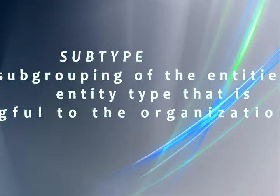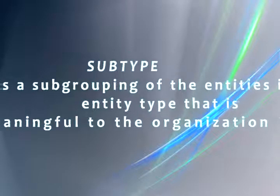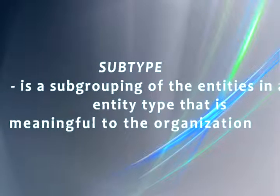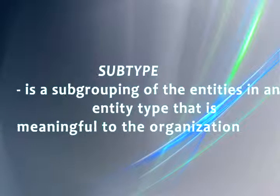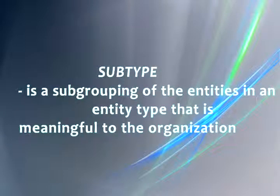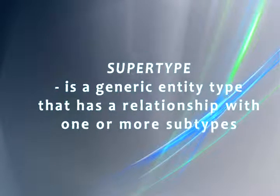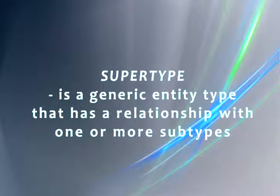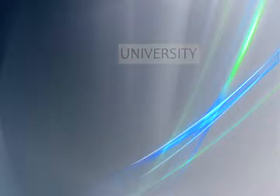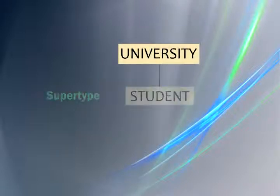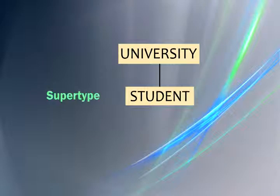A subtype is a subgrouping of the entities in an entity type that is meaningful to the organization, while a supertype is a generic entity type that has a relationship with one or more subtypes. For example, a student is an entity type in a university.